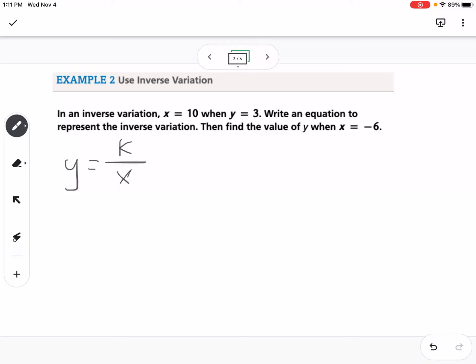It tells us that x is 10 when y is 3. So we can say 3 equals k over 10, and we can use that to find out what k is equal to. In this case, we multiply both sides by 10, so we get that k equals 30.